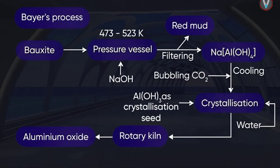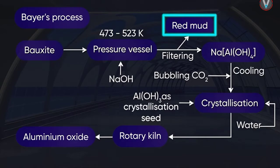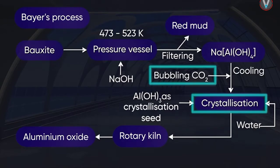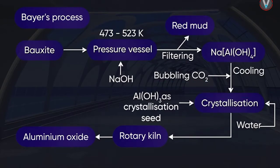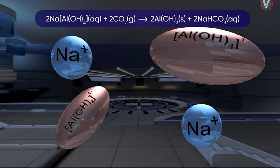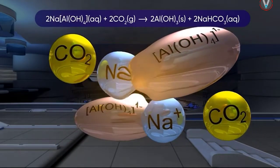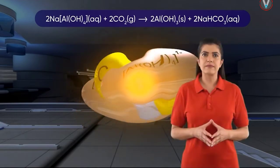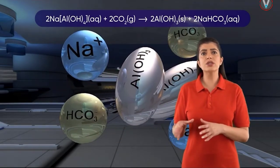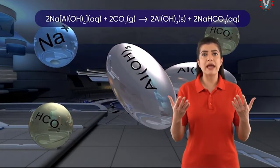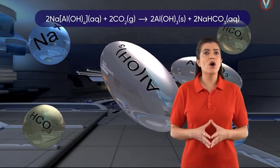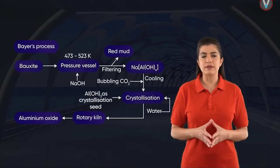The mixture of solid impurities, called red mud, is removed at this stage. The aluminate in the solution is then neutralized by bubbling carbon dioxide into it, through which aluminium hydroxide precipitates. At this stage, the solution is seeded with freshly prepared samples of aluminium hydroxide, which induces the precipitation.